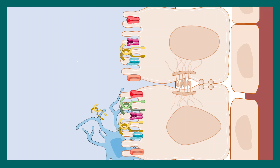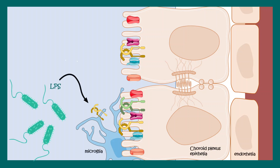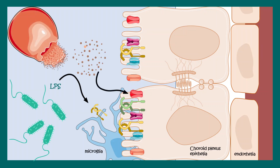Several molecular mechanisms can explain hydrocephalus. Bacterial infection, as seen in meningitis, or hemorrhage can activate specific signaling pathways. Lipopolysaccharides from bacteria or methemoglobin from hemorrhagic debris can activate toll-like receptor TLR4. TLR4 activation leads to NF-κB activation, which via TNF-alpha and specific kinases such as SPAK kinases can activate channels that secrete large amounts of water into the ventricle, causing overproduction of CSF.